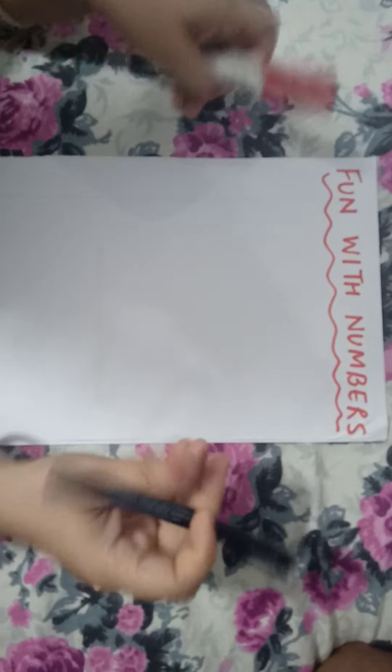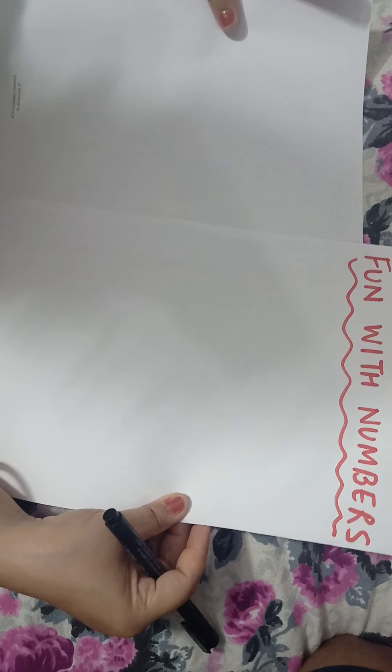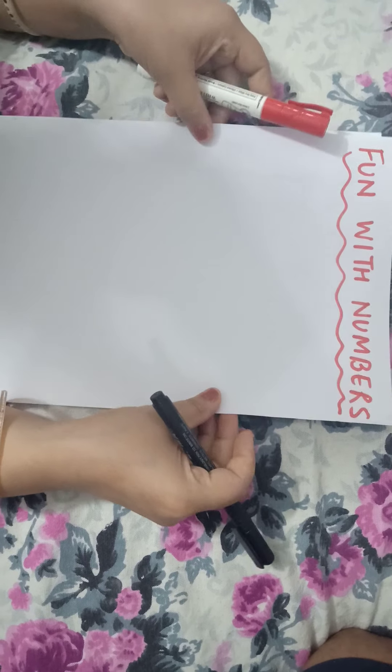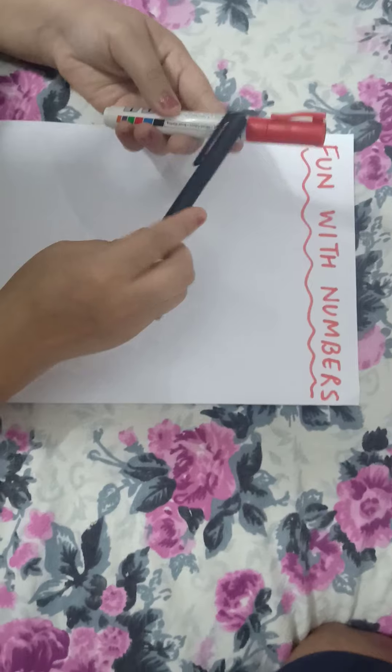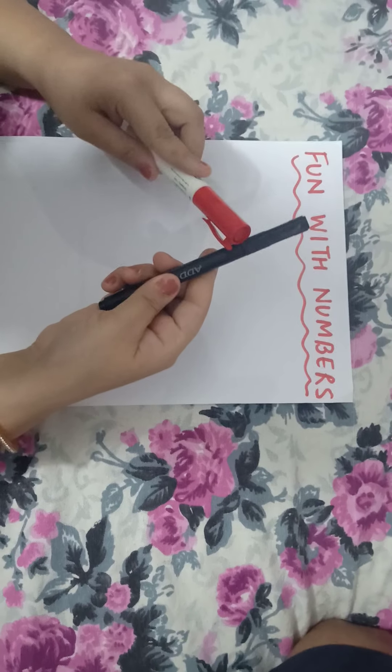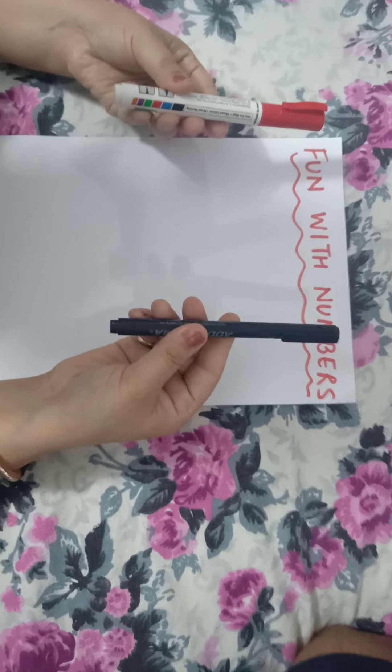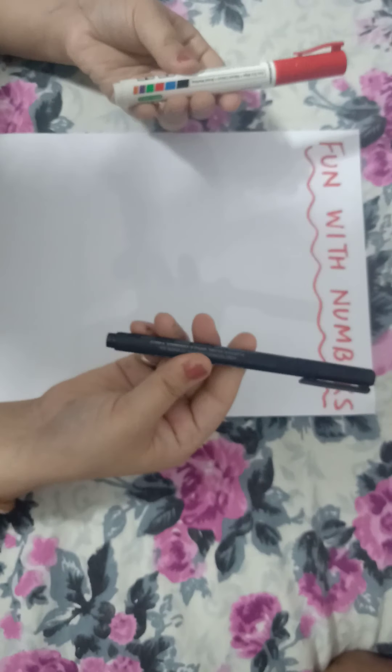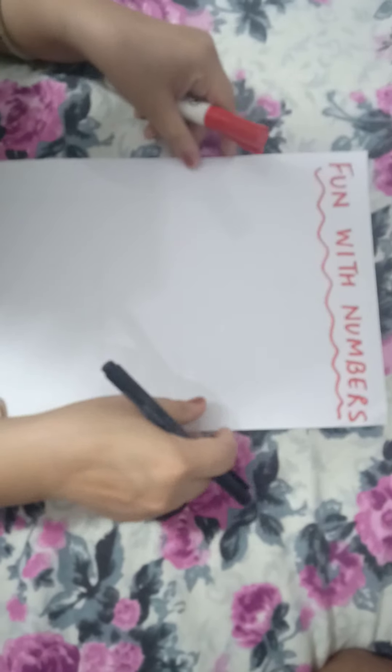So, what do we need, children? We need two white papers, white sheets. We need two colors — red and black. You can take a marker or sketch pen. I have a sketch pen and a marker, so I am using this.